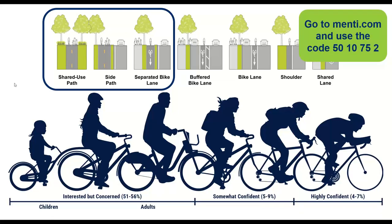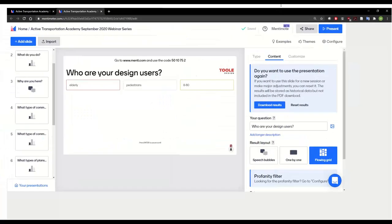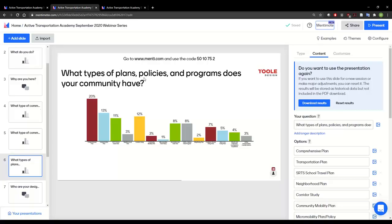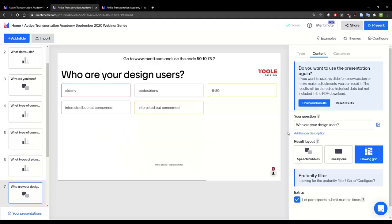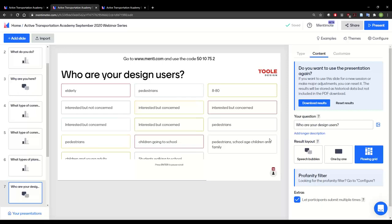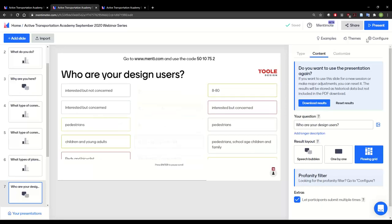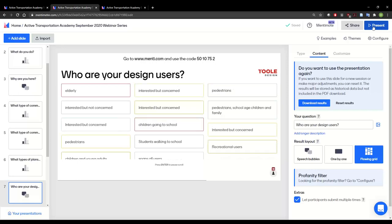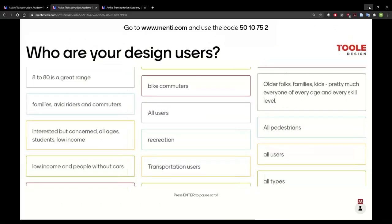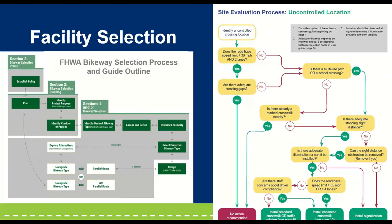We are using menti.com again, code 010752, and you should see a question popping up on that screen shortly. The question is: who are your design users? Responses include elderly, pedestrians, ages 8 to 80, and specific populations you're trying to design for, like children or low-income people. We've got one or two more slides on facility selection — we've talked about design users, and now we want to figure out how to select effective facilities.